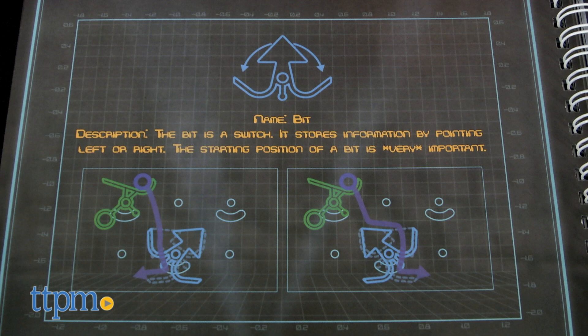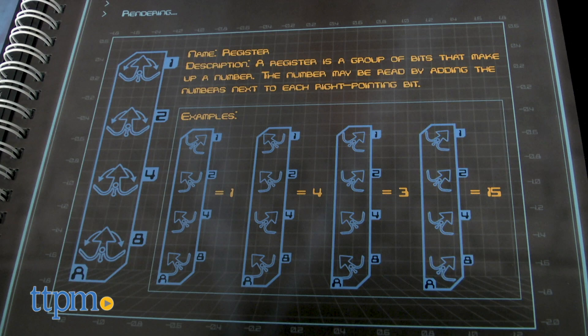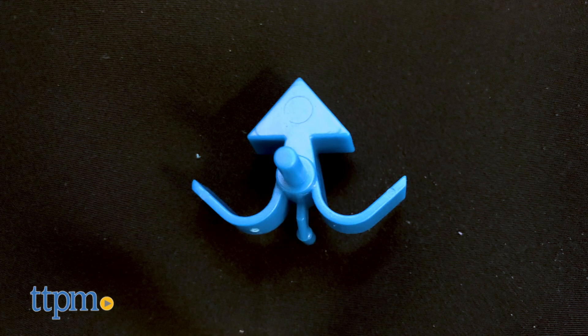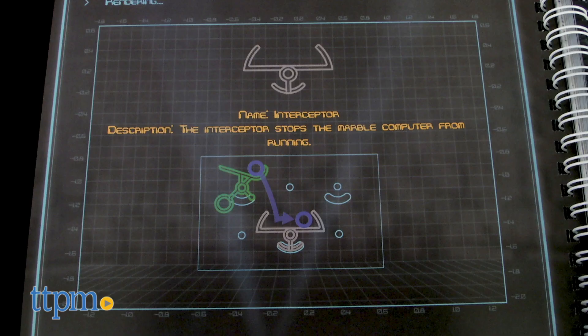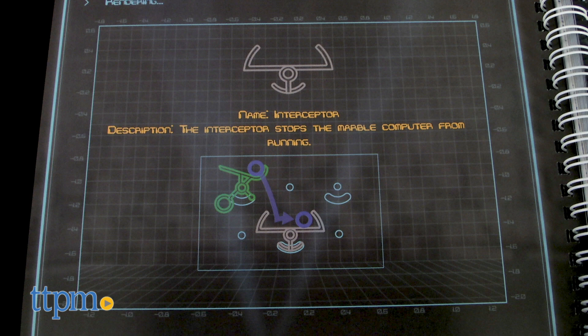The bit adds logic. It stores information by pointing to the left or to the right, like a 1 or a 0 in coding. When the computer's objective is complete, the interceptor is used to stop the computer from releasing any more marbles.